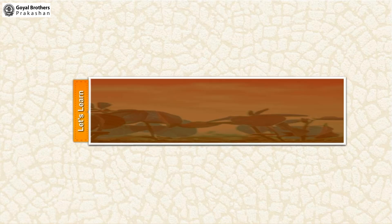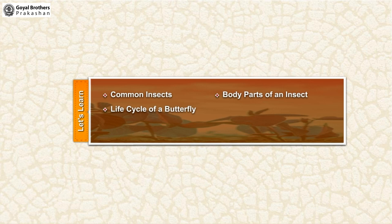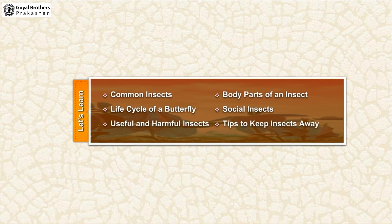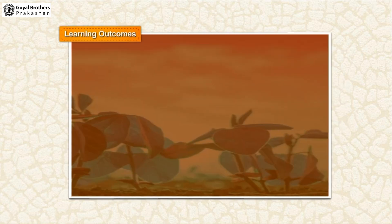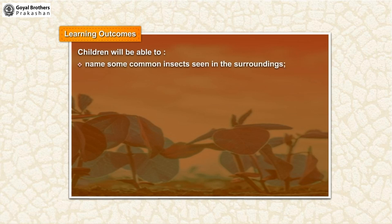Introduction. Learning outcomes: Children will be able to name some common insects seen in the surroundings.